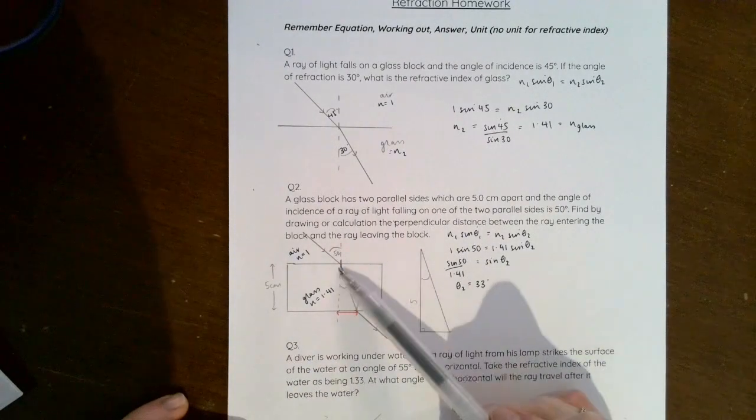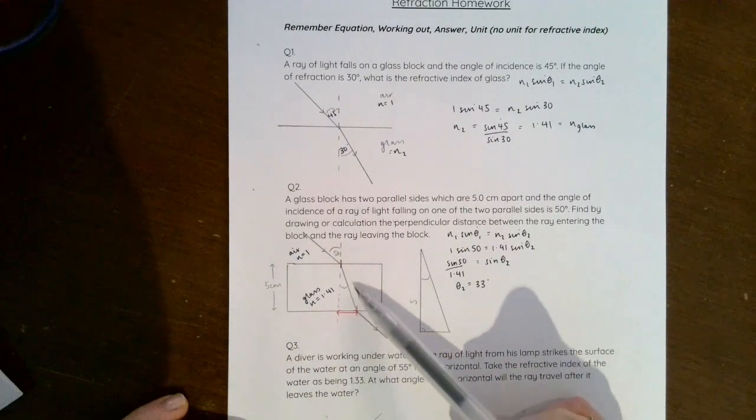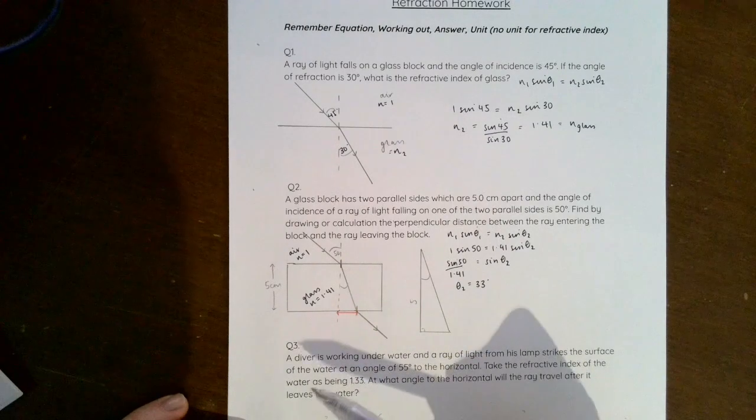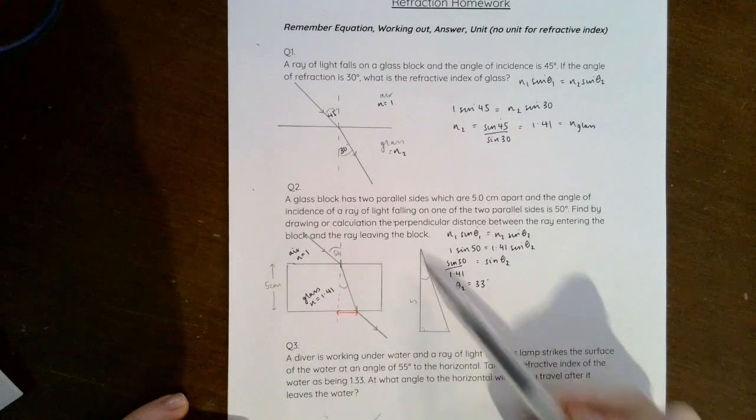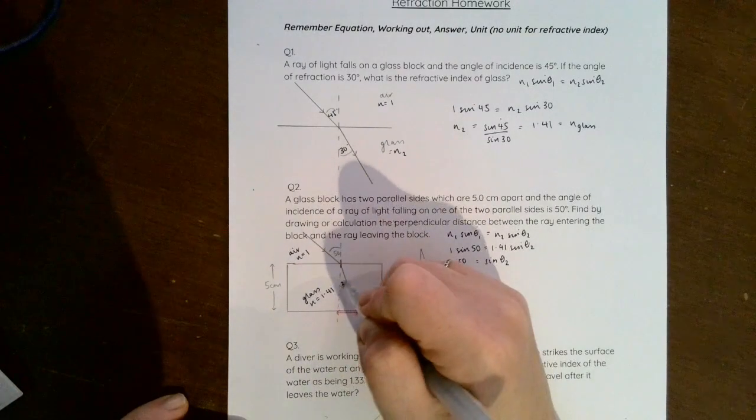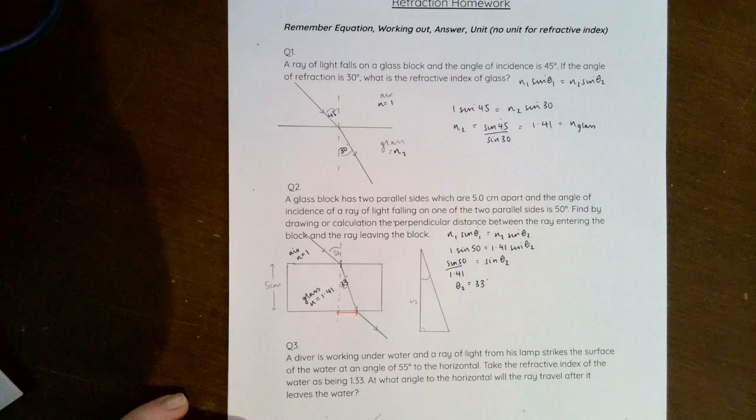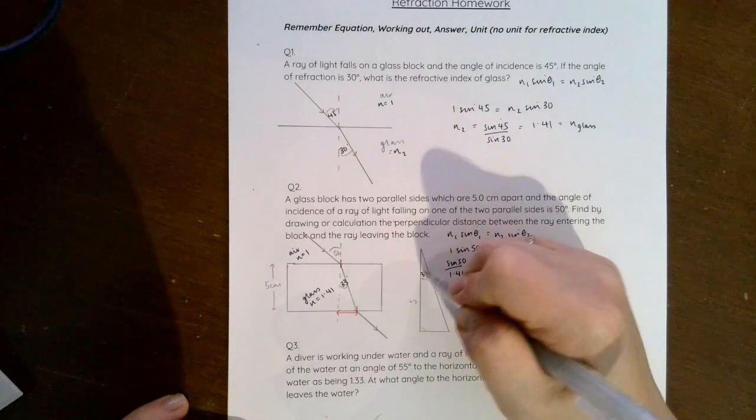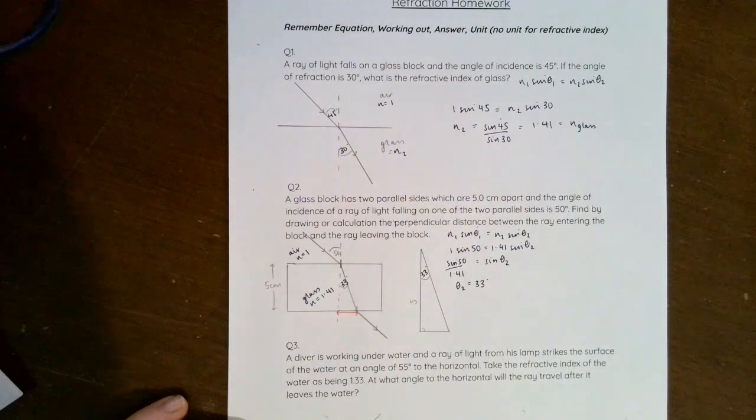Hopefully what you can see is that the triangle that gets traced from the ray in the block looks a lot like this one, and what we've just worked out is that this angle here is 33 degrees, and so I'm just going to put that into my triangle here.